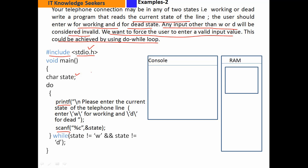जैसे ही यह line execute होगी basically memory के अंदर RAM के अंदर एक byte reserve हो जाएगा। Output statement: "Please enter the current state of telephone line, enter W for working and D for dead" — यह as it is screen के उपर print हो जाएगा। Escape sequence character use किया, single quote W के दोनों तरफ और D के भी दोनों तरफ single quote आएगा। Message as it is आ जाएगा, उसके बाद input statement है।